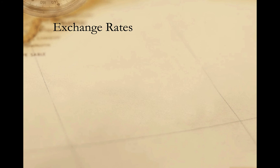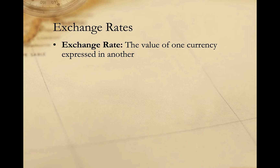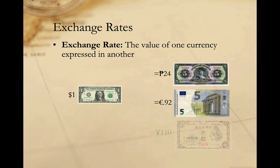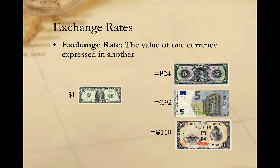Now that we've explored reserve currencies, let's look briefly at exchange rates. Put simply, the exchange rate is the expression of the relative value of currencies, with one expressed in the value of the other. For example, one US dollar might be worth about 24 Mexican pesos, or about 92 cents in euros, or about 110 Japanese yen. It's important to remember that currency values tell us nothing about the relative strengths of economies — one yen is considerably less valuable than one Mexican peso, but Japan has the stronger economy. They only tell us about the relative value of currencies. That said, relative currency values or exchange rates matter in a number of ways.